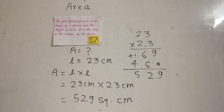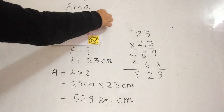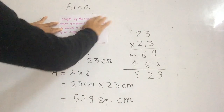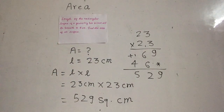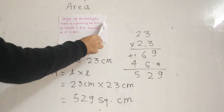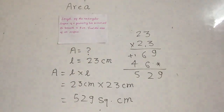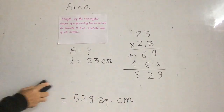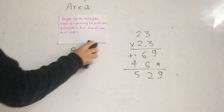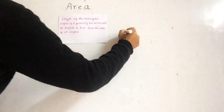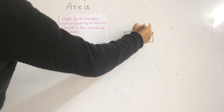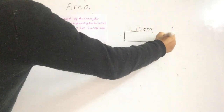Once again, let's discuss another example. The length of the rectangle surface of the geometry box is 16 cm and its breadth is 9 cm. Find the area of the surface. This is a rectangular surface, so we use a different formula. The length is 16 cm and the breadth is 9 cm.